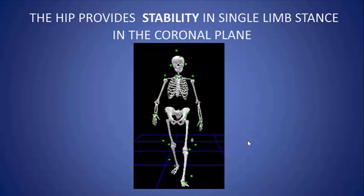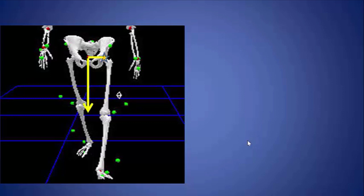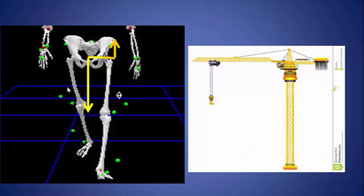The hip also provides stability in single limb stance in the coronal plane. When you're standing on one leg, the center of body mass is in the middle of the pelvis, and the axis of rotation of the stance phase leg is at the hip joint. There's a tendency for the pelvis to droop and rotate downward during single limb stance. The reason it doesn't is because of a strong abductor mechanism between the pelvis and the greater trochanter, which balances that force to keep the pelvis level. This is similar to tower cranes — with the long arm for lifting and the short arm with weights attached to maintain balance.